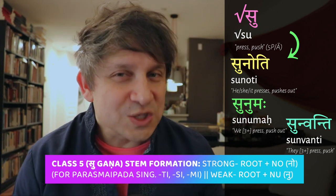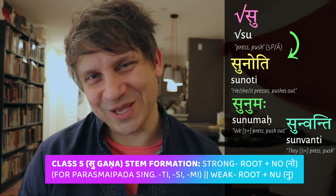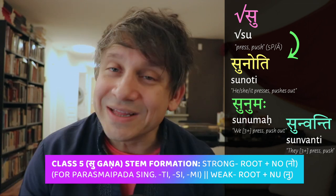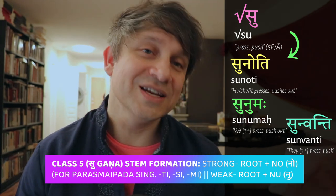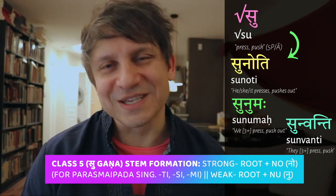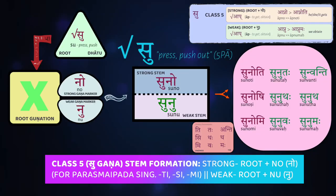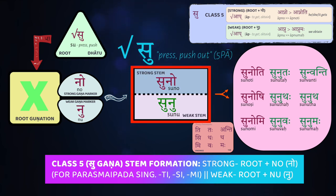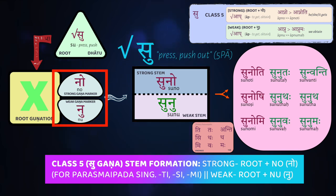The weak form is su-nu-maḥa, we press (three or more), or su-nu-vanti, they press (plural). As you can probably tell, the stem formation for class 5 is going to be a bit more straightforward than class 2. Like with all the non-a-gaṇas, we're going to have two different stems — strong and weak. Here the difference between the two is marked by two distinct gaṇa markers that we put on, instead of anything we do with the root itself, so there's no guṇation going on in class 5.